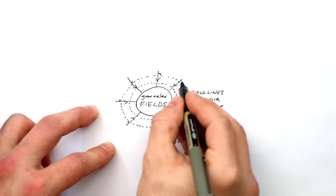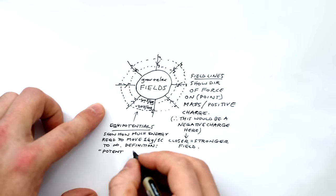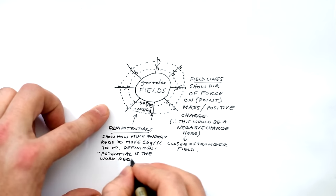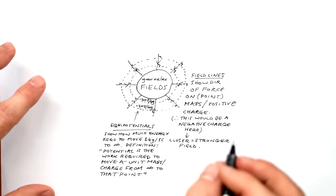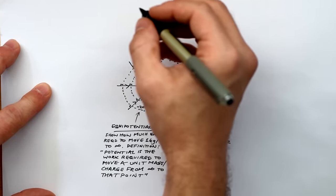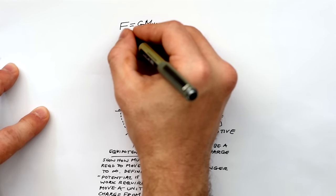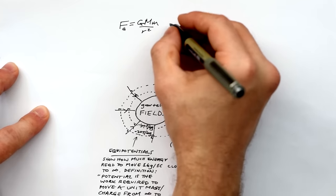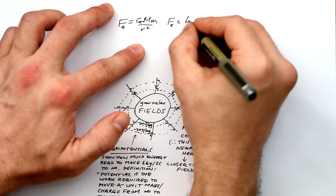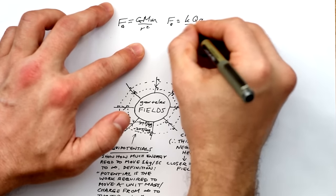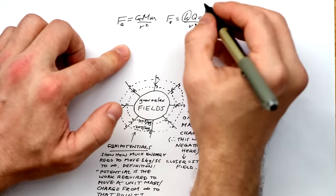Potential shows how much energy you need to move one kilogram or one coulomb to infinity. The definition is: potential is the work required to move a unit mass or unit charge from infinity to that point — that's why it's always negative for attractive fields. Force of attraction between two masses is equal to GMm over r squared: force is proportional to the product of the two masses and inversely proportional to the square of their separation.